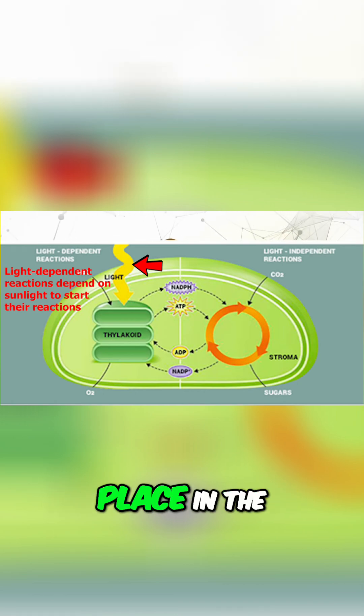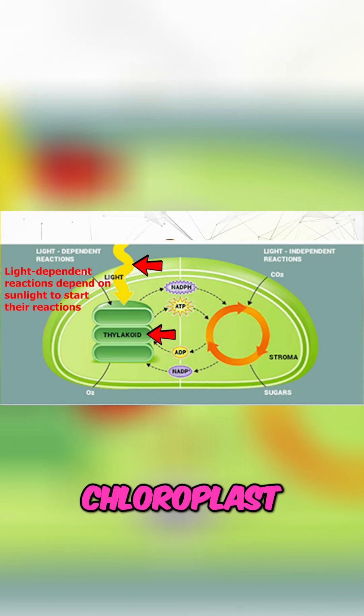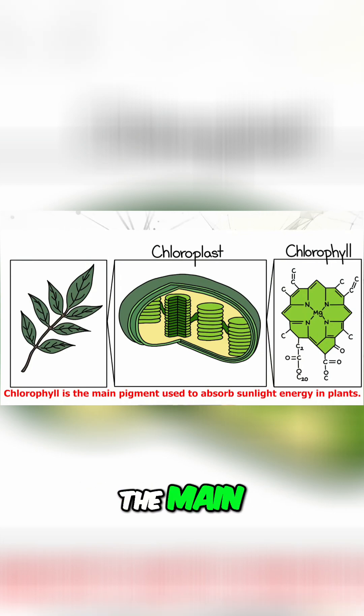These light-dependent reactions take place in the thylakoid membrane of the chloroplast, which contains chlorophyll. Now chlorophyll is the main pigment used to absorb sunlight energy in plants.